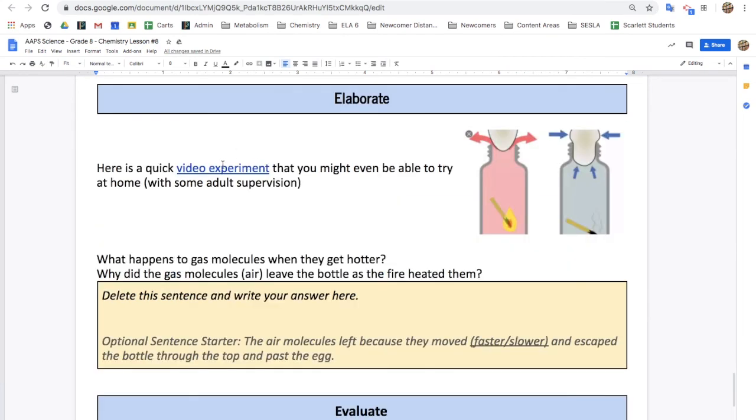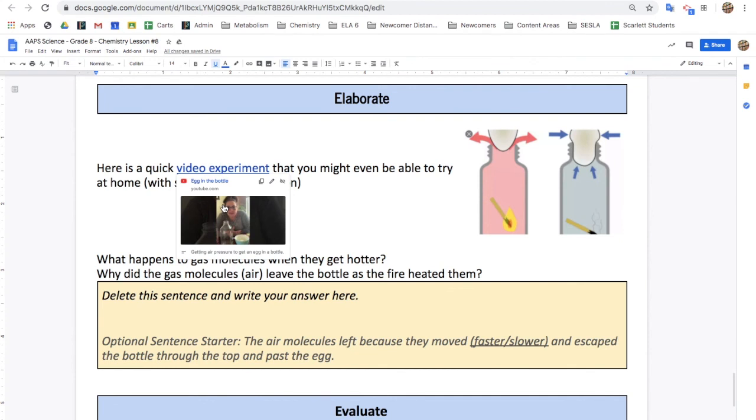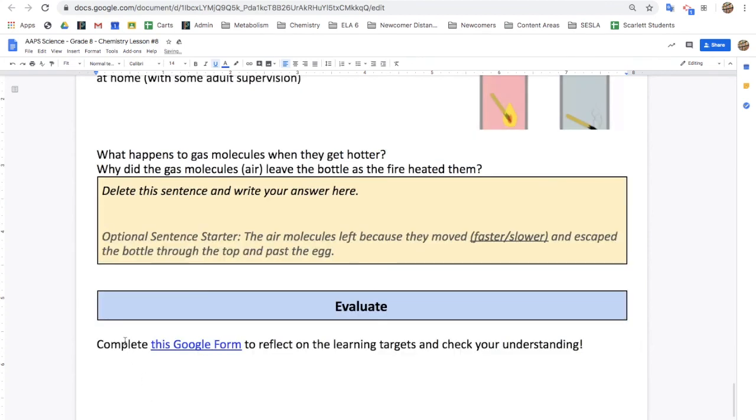After that, watch a quick video experiment about an egg in a bottle. You can even try it at home with some adult supervision. You'll finish today by completing this Google form to reflect on the learning targets and check your understanding.